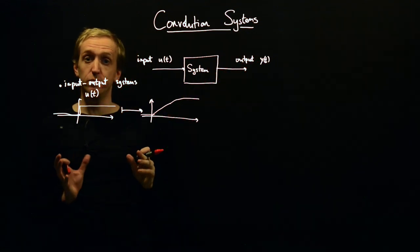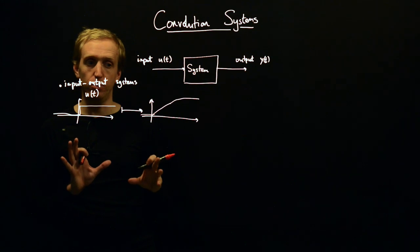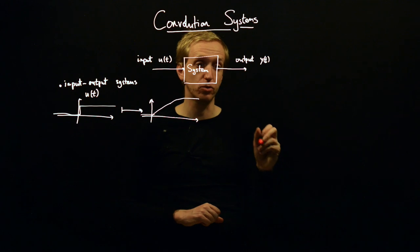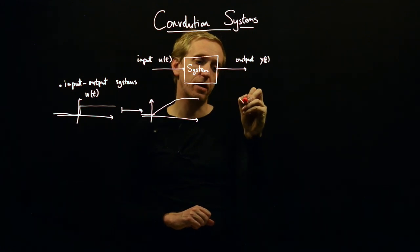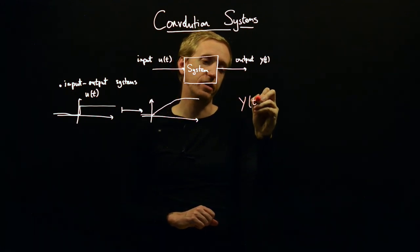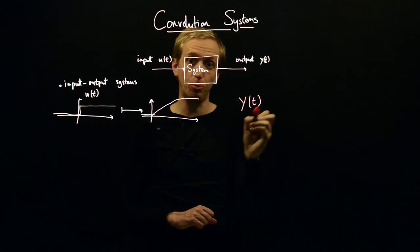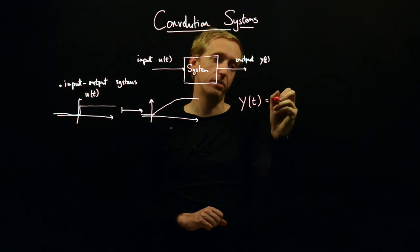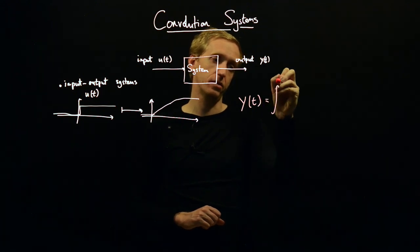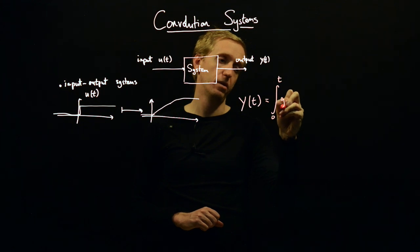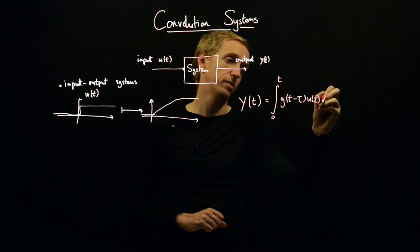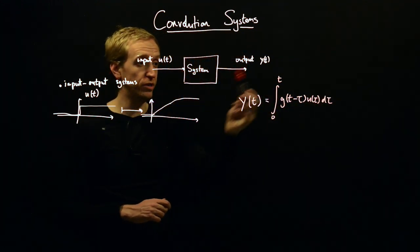In convolution systems, the input and output are related through the convolution integral. The output y(t) is given by the integral of g(t − τ) · u(τ) dτ. This is our convolution integral.